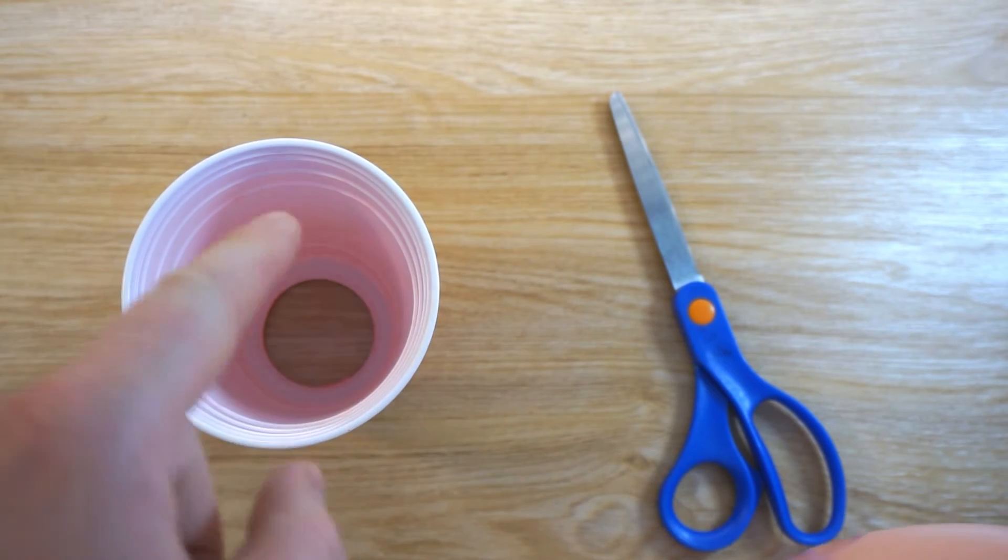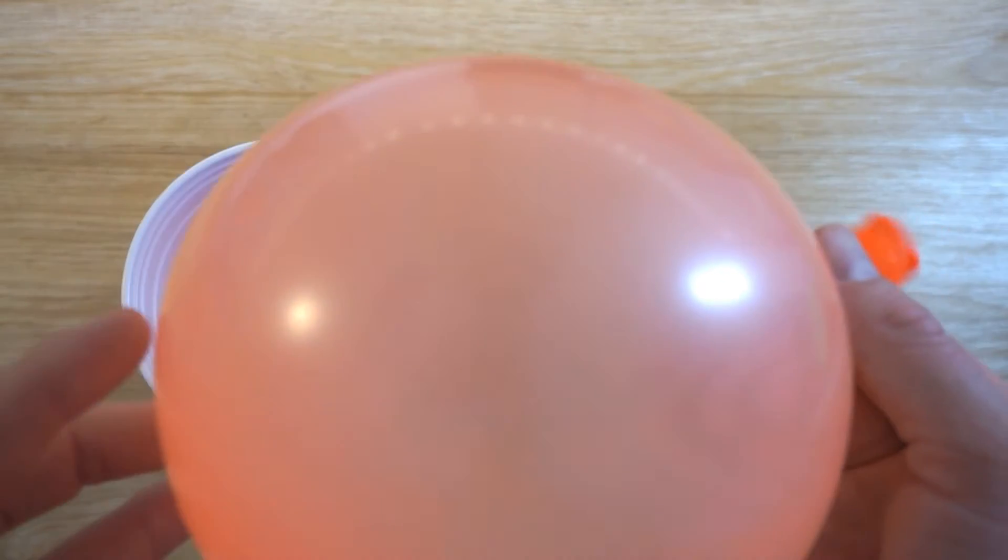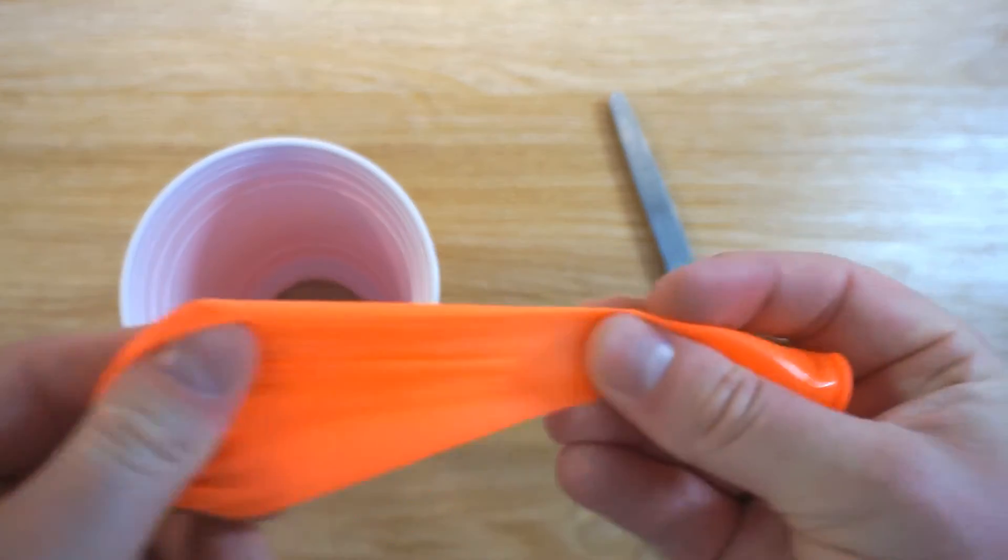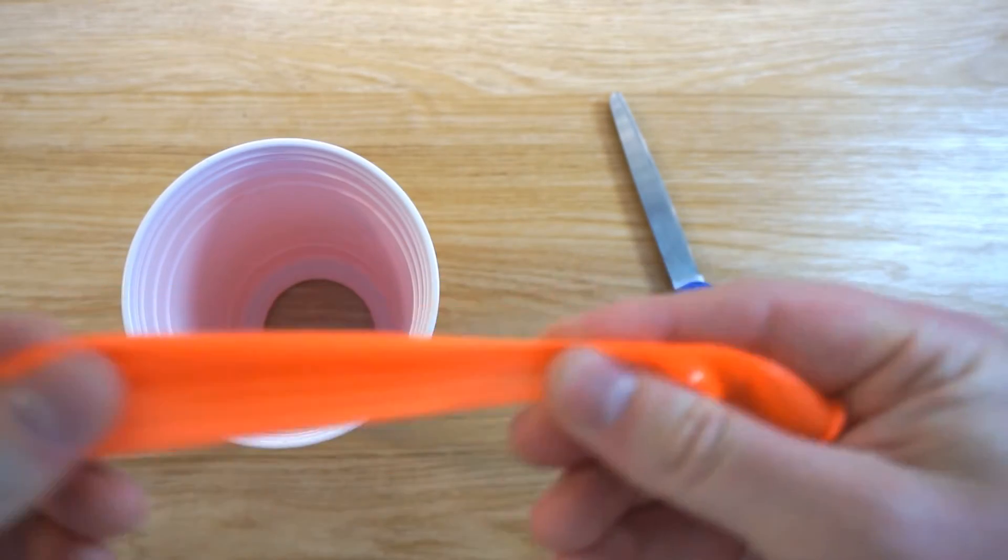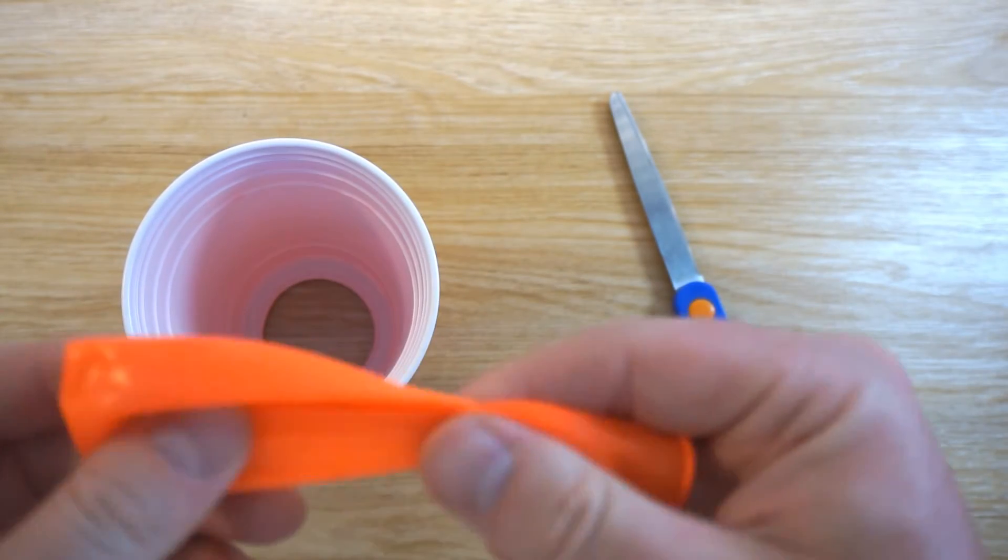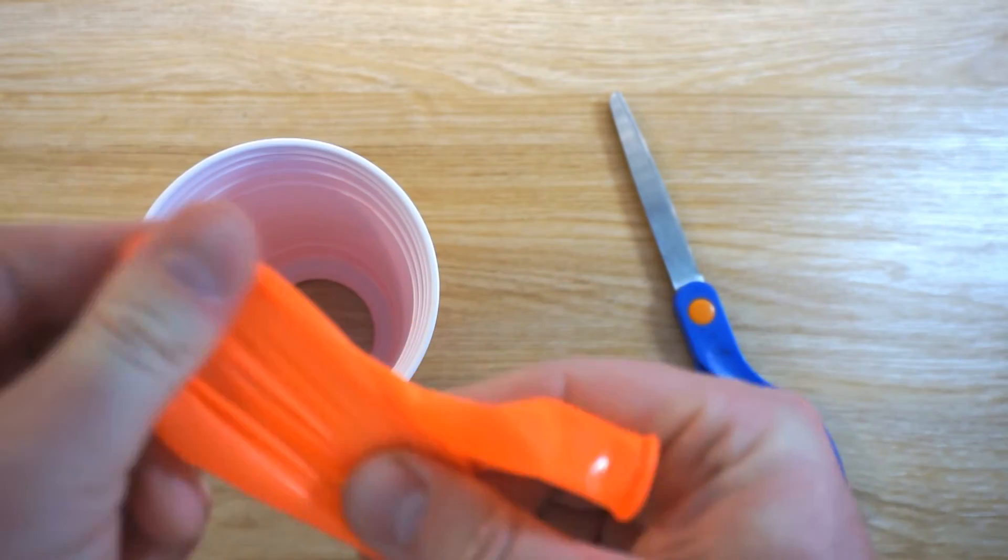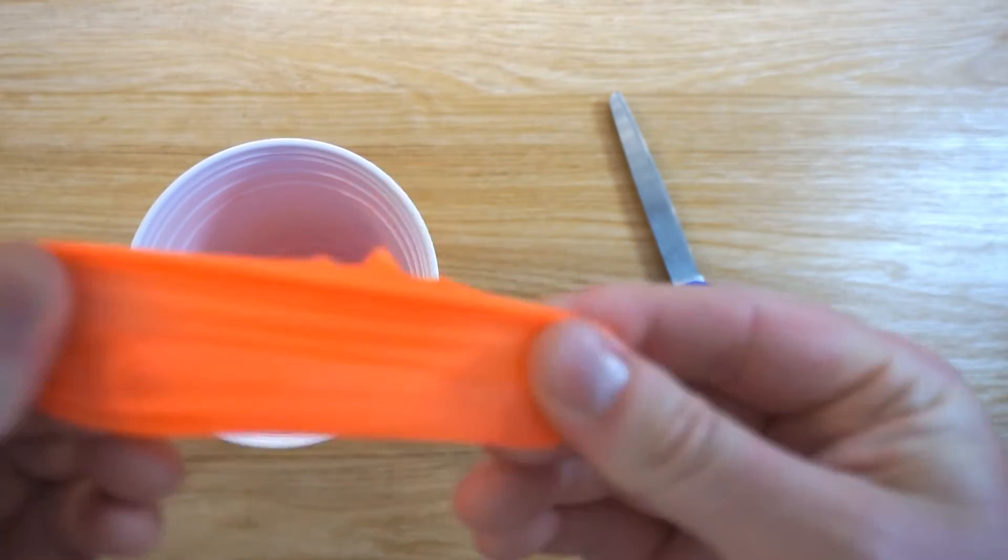Before we try to stretch the balloon over the cup, what I've done is inflated the balloon, which gives us some more elasticity. It's stretched the rubber a bit more and increases our chances of getting it over the rim of the cup without it tearing. So give it a good stretch before you actually cut into the balloon.